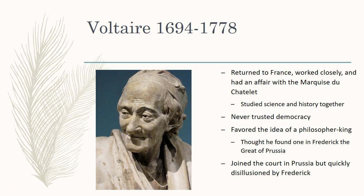He has this idea of the philosopher king, this enlightened despot, and he thinks he's found one in Frederick the Great of Prussia. Prussia is one of the many German states of this time, and as we'll see later in the semester, it is going to be one of the key players in the creation of the country of Germany. Frederick the Great is the ruler of this large German state called Prussia. They had been writing letters back and forth to each other, seeing eye to eye, and everything was going great.